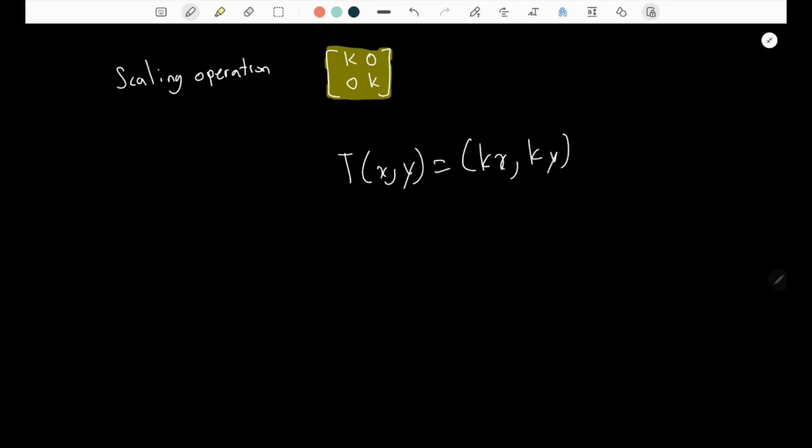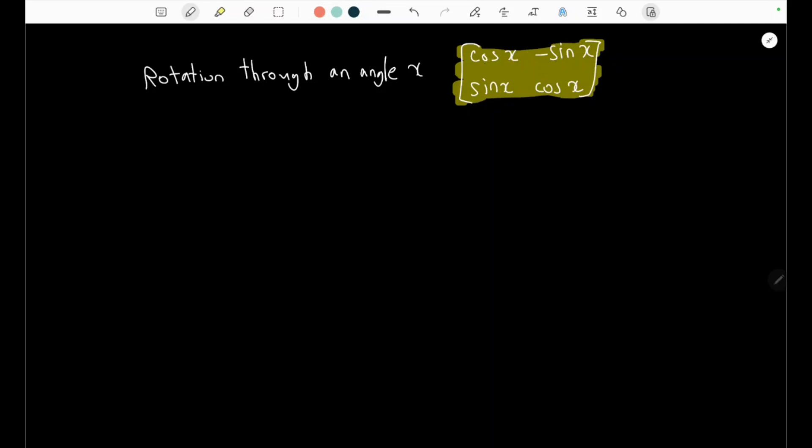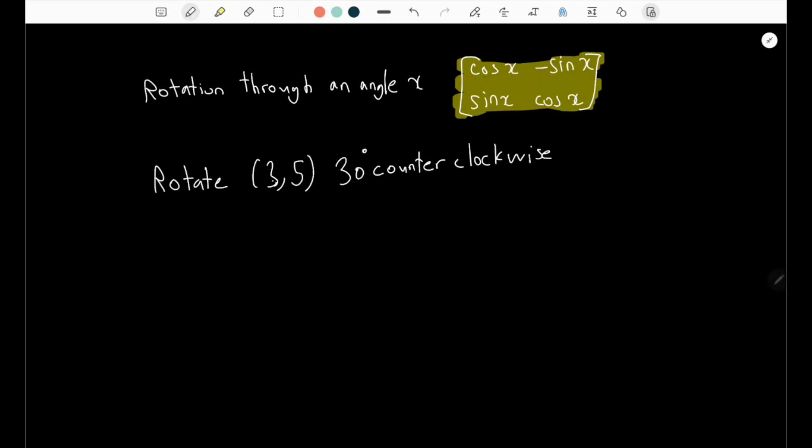Rotation through an angle x, the standard matrix you have to memorize is the one highlighted. Now let's do an example question. We have a question which says rotate (3,5) 30 degrees counterclockwise. So just apply the formula - the matrix will be just substitute 30 instead of x in the formula.